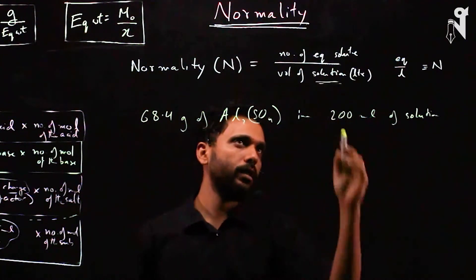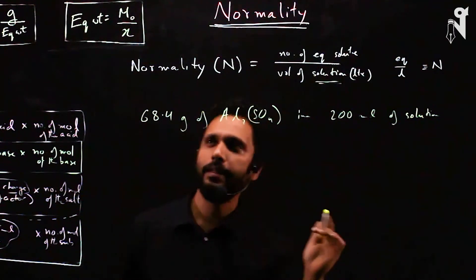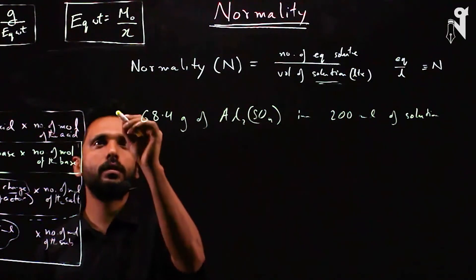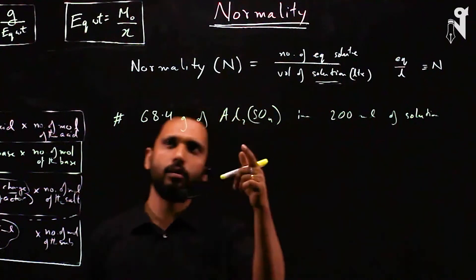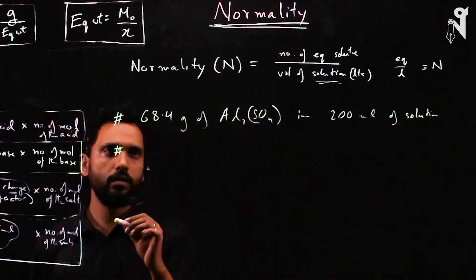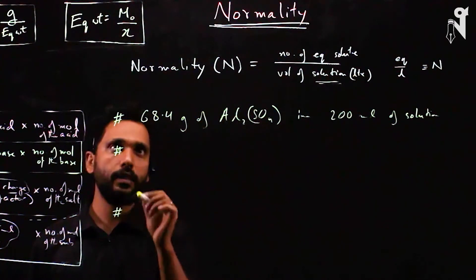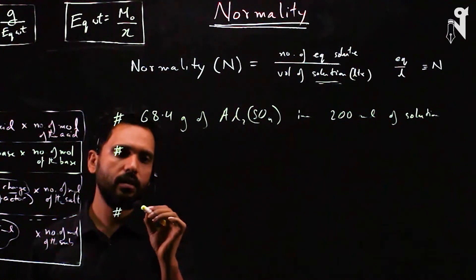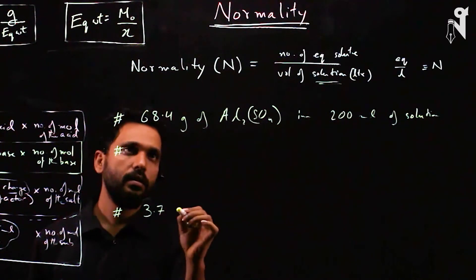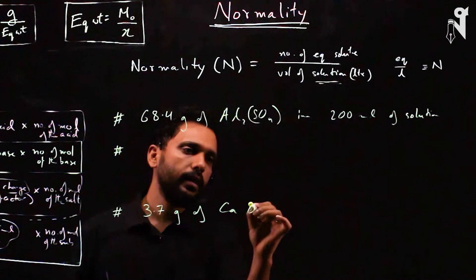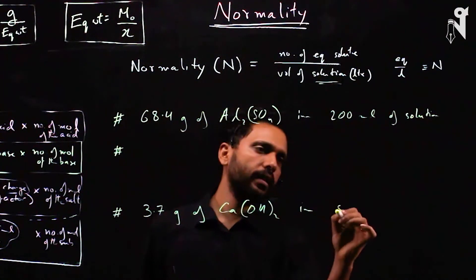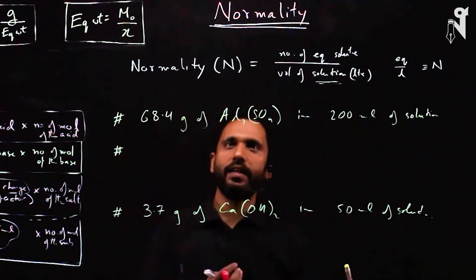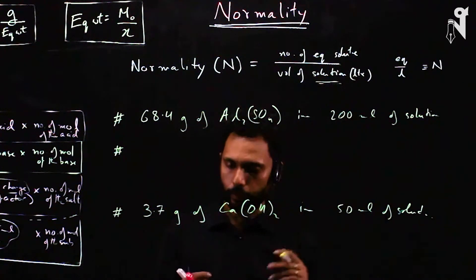Be careful — we have solution volume, not solvent. The solution is 200 ml. Find the normality of this. Also, the second problem: 3.7 grams of calcium hydroxide in 50 ml of solution.